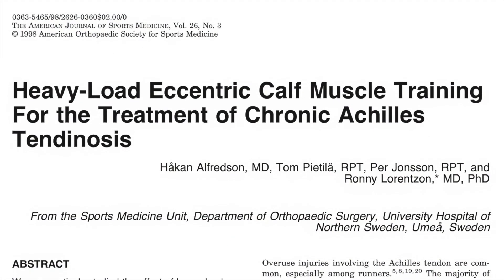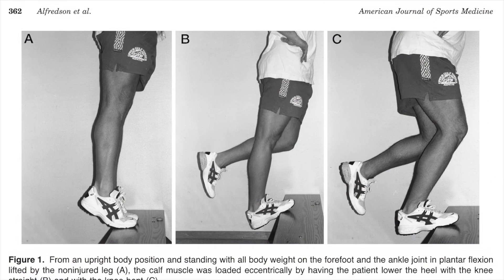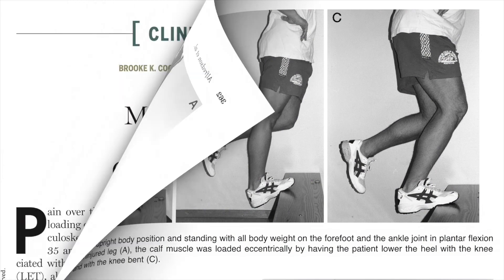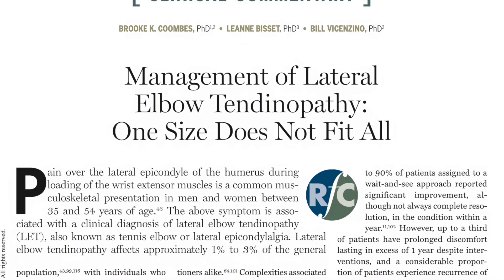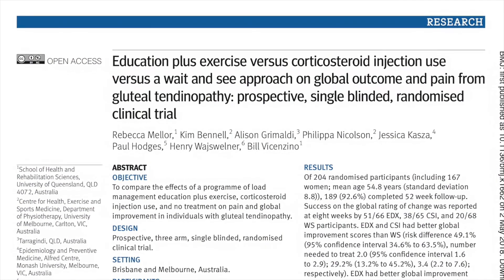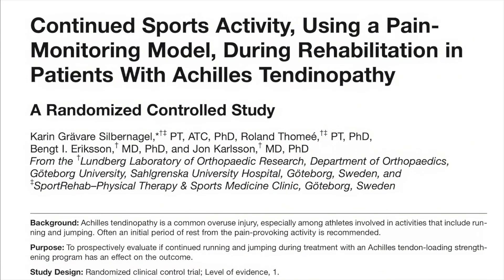Of all these approaches, exercise regimens or tendon loading programs are considered the most effective conservative approach. In the 1990s, eccentric training became popular, redirecting a management approach that was until then largely based on anti-inflammatory medications and passive treatment strategies. The success of eccentric exercise led to the presumption that isolated eccentric muscle contractions were needed, but this has since been refuted. We now know that a mix of contraction types — eccentric, concentric, and isometric — all provide benefit in the treatment of tendinopathy.